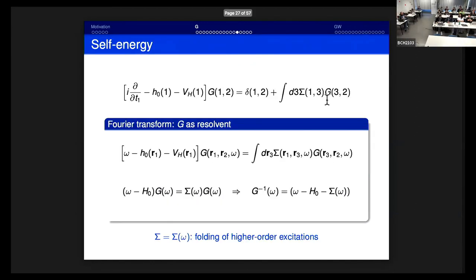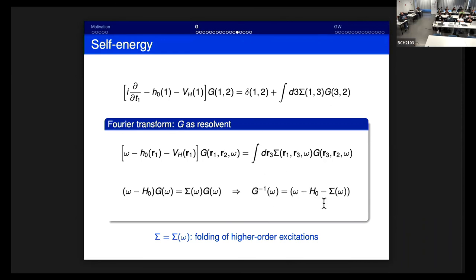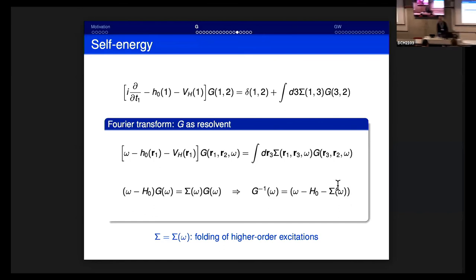The Dyson equation is something you will see all your life if you do this kind of work — it is very powerful. If there is no Coulomb interaction, the Green's function is the solution of the equation without the self-energy term — the Hartree Green's function G0, the resolvent of the Hartree Hamiltonian. The full many-body Green's function includes the self-energy with exchange and correlation. The combination of these two equations gives the Dyson equation: G = G0 + G0 Σ G.